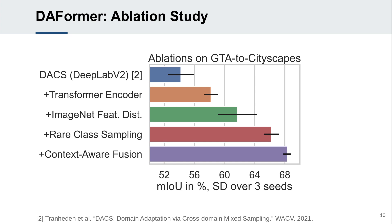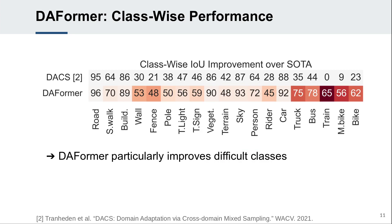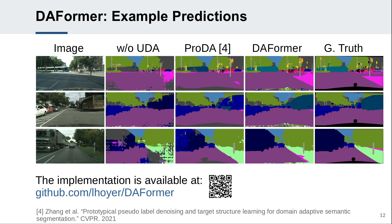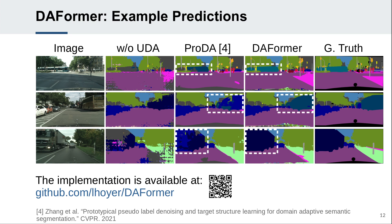In the ablation study, we show significant successive improvements of the proposed components over a strong UDA baseline. In particular, DAFormer learns even difficult classes that previous methods struggled with, such as truck, bus, and train. This is also reflected in the example predictions, showing that DAFormer can better distinguish train and bus, bus and car, and truck and car. Thank you for watching this video.